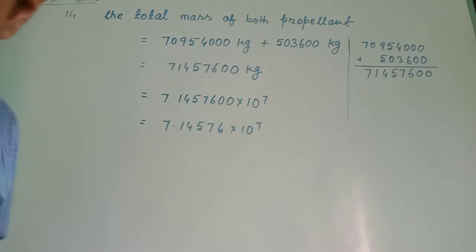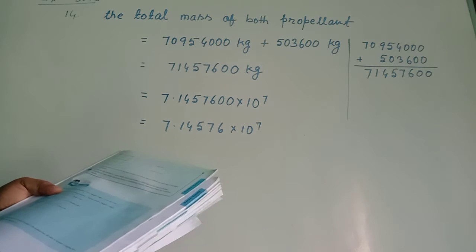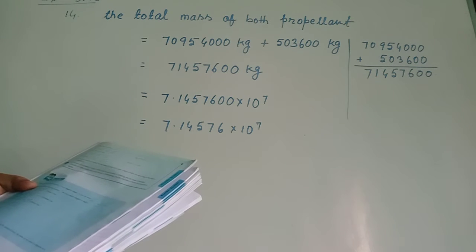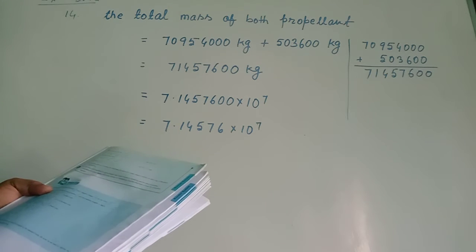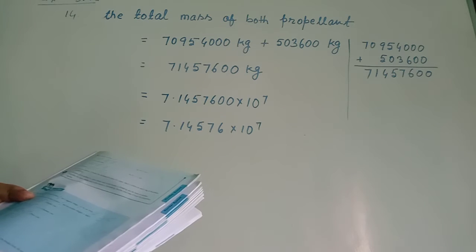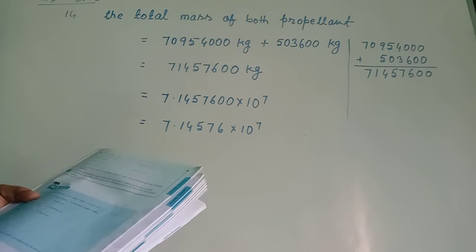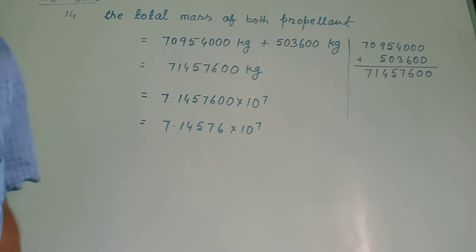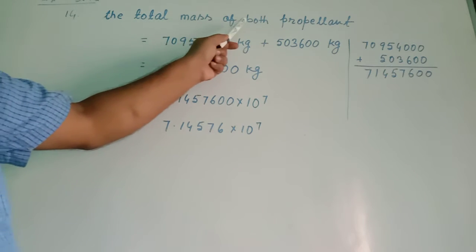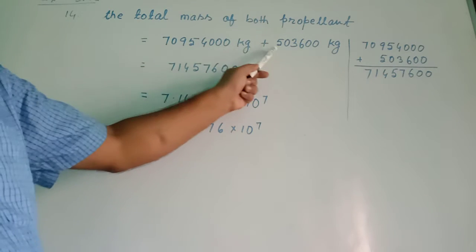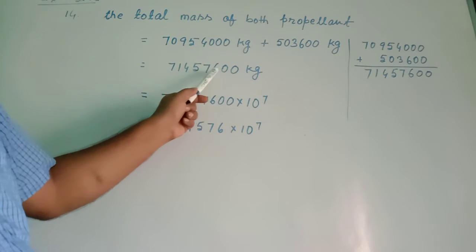In question number 14, the question states that the mass of a propellant in a space shuttle solid rocket booster is 503,600 kg, and the mass of another propellant is 709,540,000 kg. We need to find the total mass of both propellants together. We find the addition, and I wrote the total mass equals the sum of both. I did the addition in rough and got 710,043,600 kg.